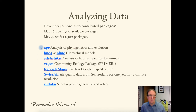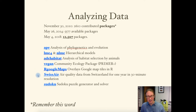Here are some examples of just a small number of these more than 12,000 packages, and we'll see a couple of these as we go through the course. You have all kinds of strange names like Ape, LME4, and Aid Habitat. The vegan package is a really big one for ecologists. There's an R Google Maps package for mapping work. Swiss Air has a ton of data on air quality in Switzerland. And there's even a Sudoku package that will let you generate and solve Sudoku puzzles.